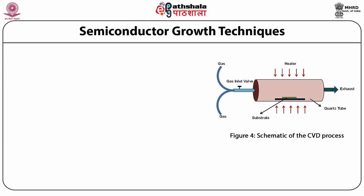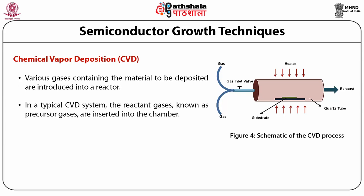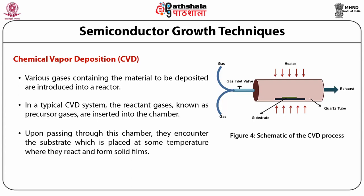The various techniques for epitaxial growth of semiconductor thin films depend on the phase of the material to be grown. The first technique is chemical vapor deposition (CVD). Various gases containing the material to be deposited are introduced into the reactor. In a typical CVD system, the reactant gases — known as precursor gases — are inserted into the chamber, where they encounter the substrate placed at some temperature, and they react to form solid films.